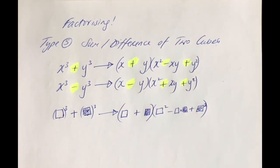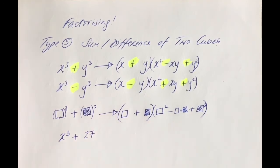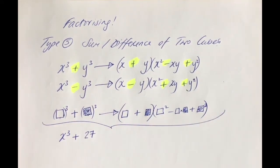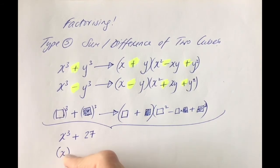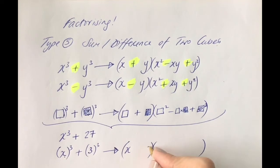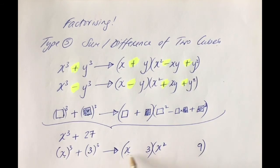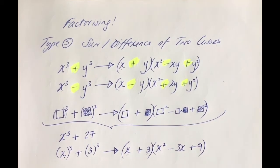Let's take an example: x cubed plus 27. The first thing we need to figure out is what's being cubed. What's being cubed here is obviously x, and what's being cubed to get 27 is obviously 3. So to factorise it, open up your brackets, put x and 3 in the first bracket, then square x to get x squared, square 3 to get 9, multiply the two together to get 3x, and the signs with the sum go plus, minus, plus.